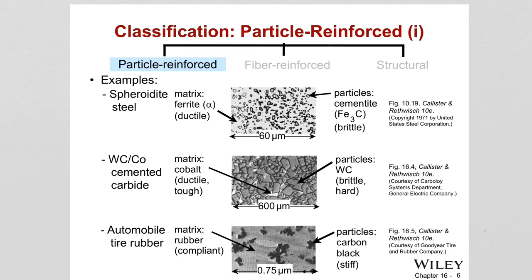Another example of particle reinforced composites is tungsten carbide particles in a cobalt matrix. As seen in the microscopic images, the matrix is cobalt, which is ductile and tough, while the tungsten carbide is a ceramic — hard and brittle. So you achieve both strength and ductility at the same time.